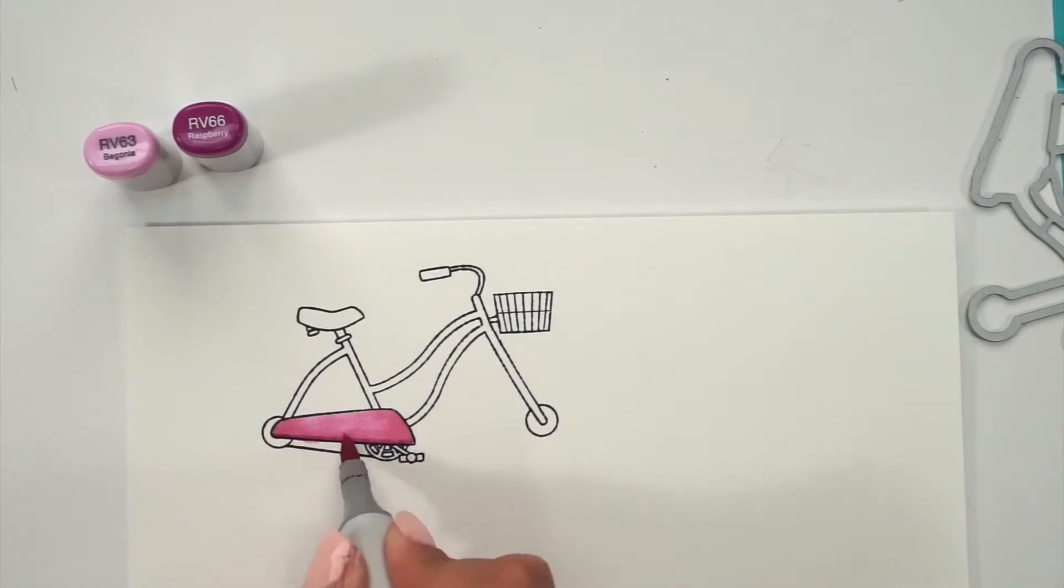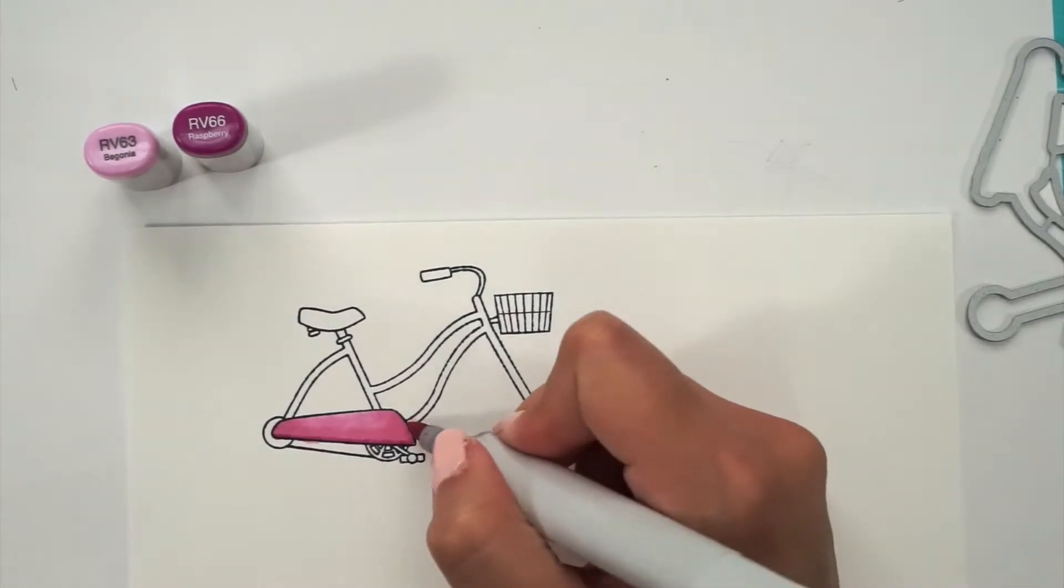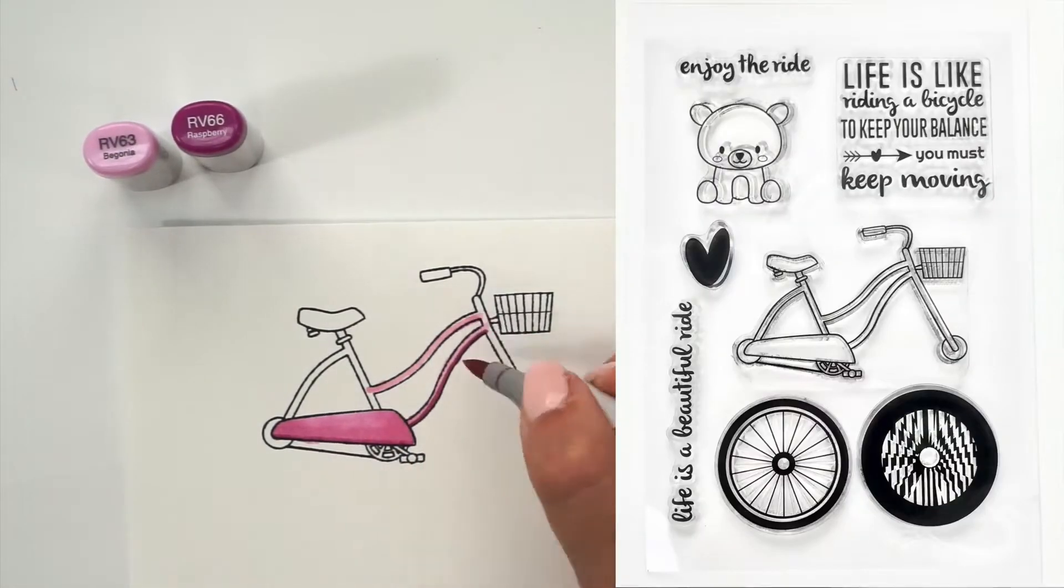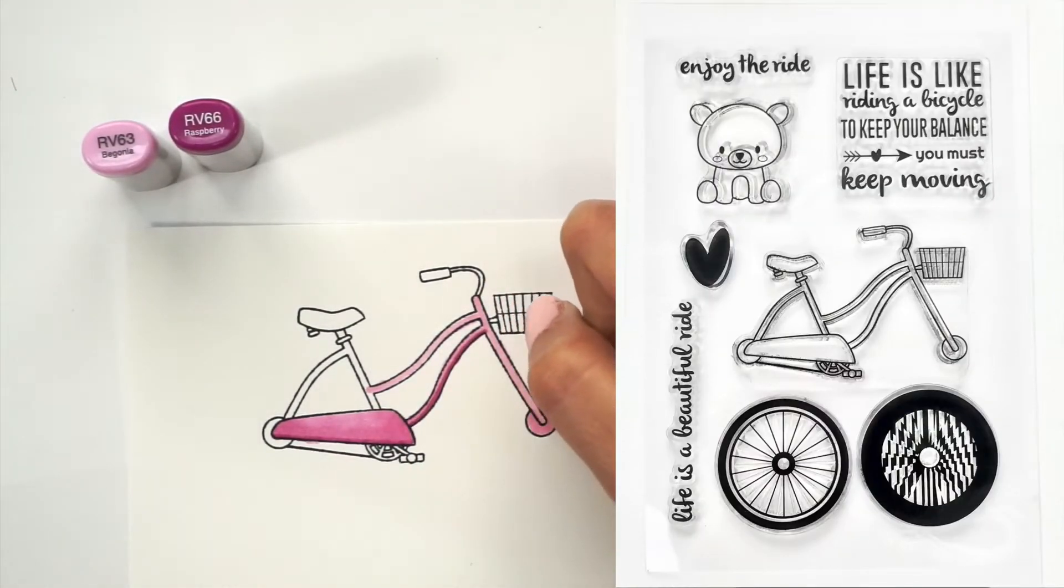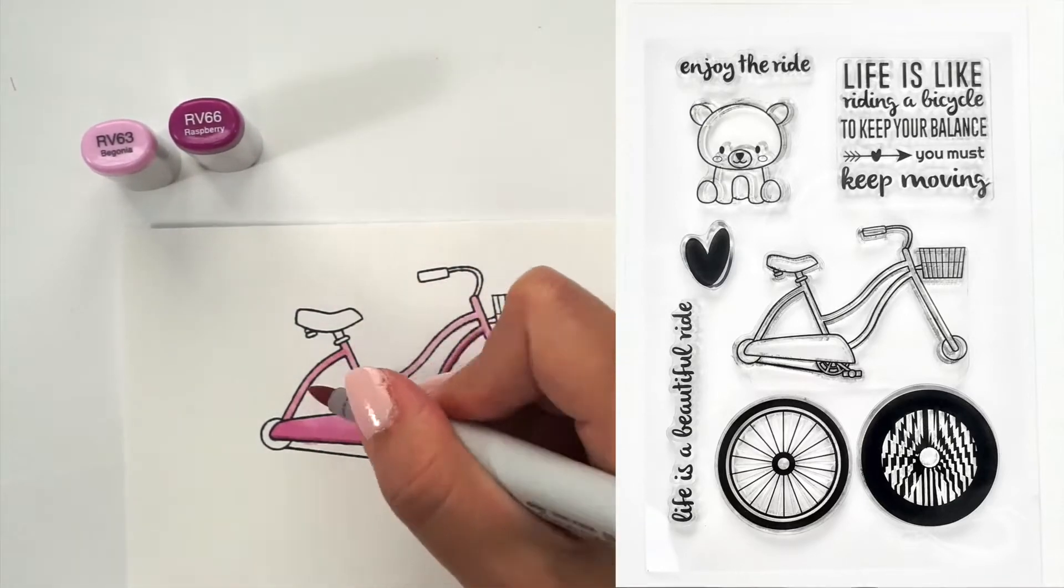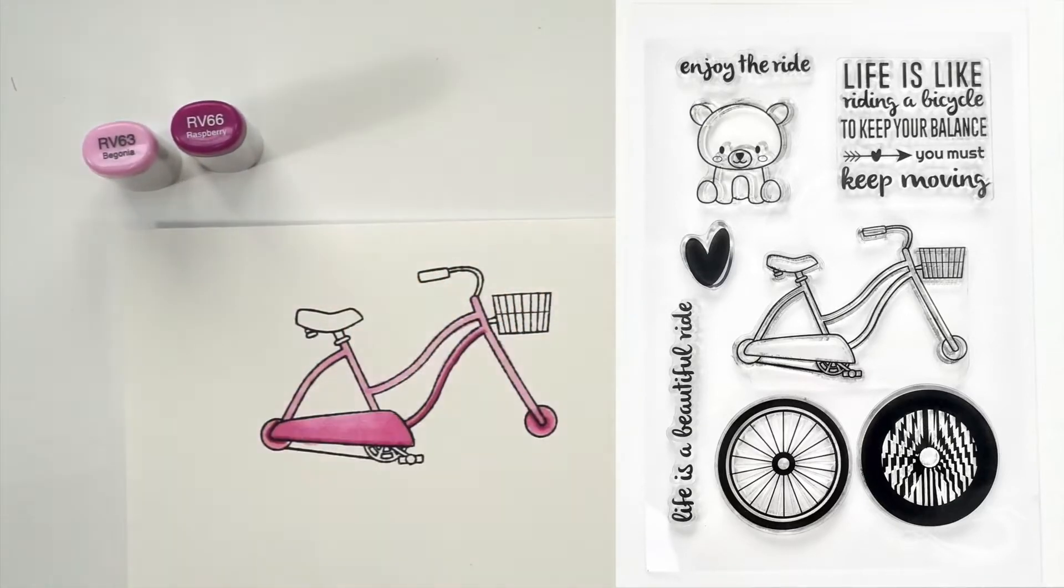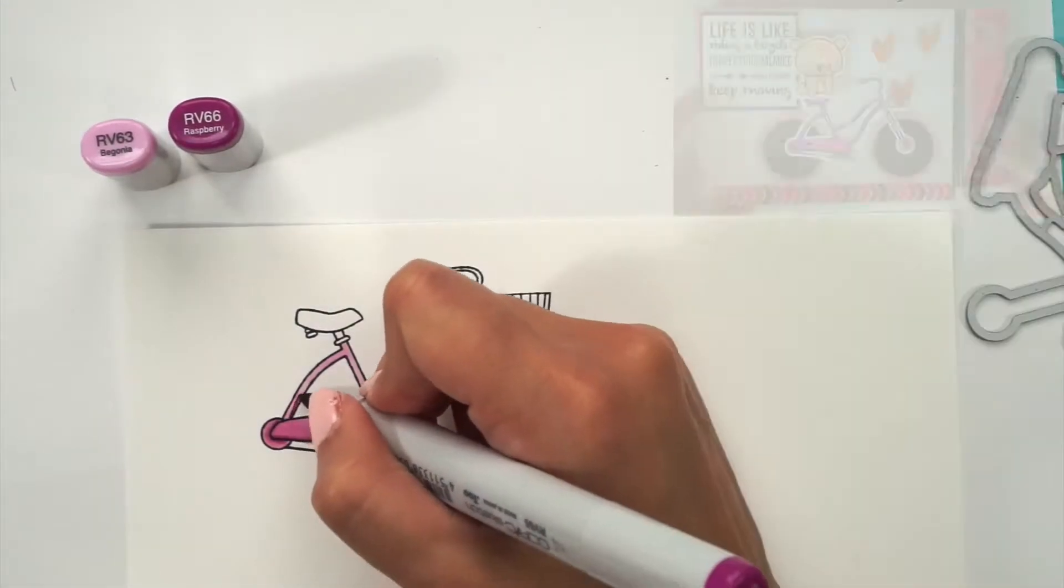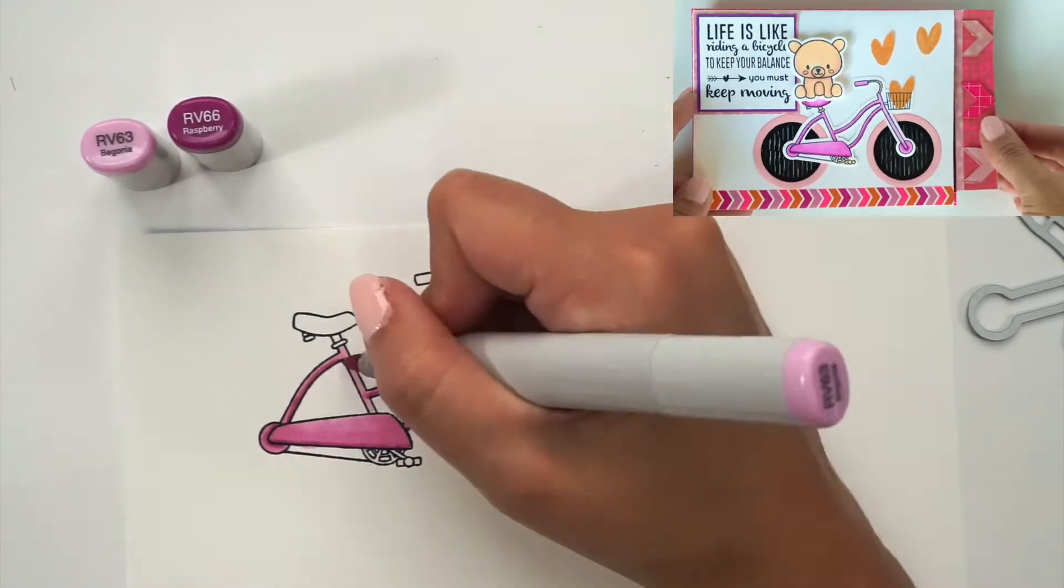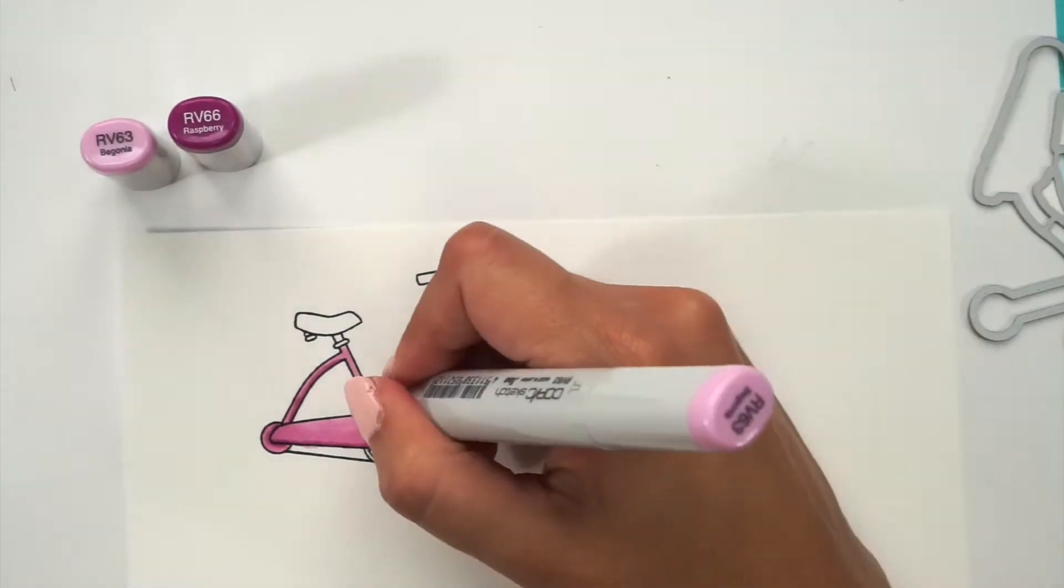We also included some cute sentiments that we thought will go great with this card. We have enjoy the ride, life is a beautiful ride, and this one that goes great with the animated card. It says, life is like riding a bicycle. To keep your balance, you must keep moving. We thought that was so cute to have with the teddy bear riding the bicycle, watching the wheels go back and forth.